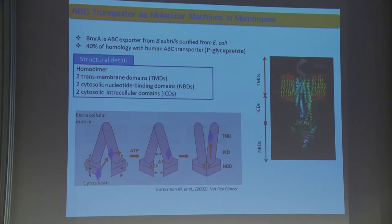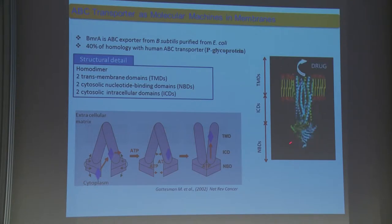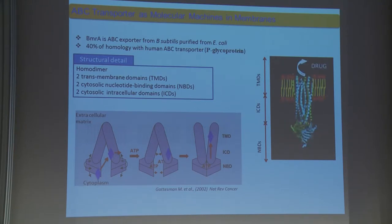I'm working with bacterial ABC transporter which has open conformation. ATP-driven conformational change induces or exports the drug. ATP binds, closes, and then the drug is translocated outside the cell. So it has two shapes: one is conical, one is cylindrical.